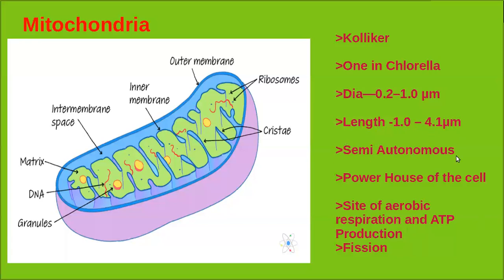Mitochondria are considered a semi-autonomous cell organelle because the matrix contains extra-chromosomal circular DNA, a few RNA molecules, and ribosomes. It has its own DNA and ribosomes. That is why it is called a semi-autonomous cell organelle. Mitochondria also divide by means of fission.